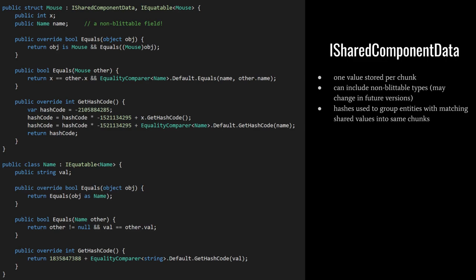Next, we have shared components, which are defined with their own special interface, ISharedComponentData. The idea is that all entities within a chunk share the same value for a shared component type, but unlike chunk components, these shared components logically do belong to the individual entities. When you set shared component values, you set them on individual entities, and if an entity then has a different value from all others in its chunk, it has to move into a chunk that shares its new value, or a new chunk has to be created. So if you have a thousand entities and the shared component value is different for each one, each entity will have to be stored in its own chunk — very wasteful and defeating the whole purpose of ECS.